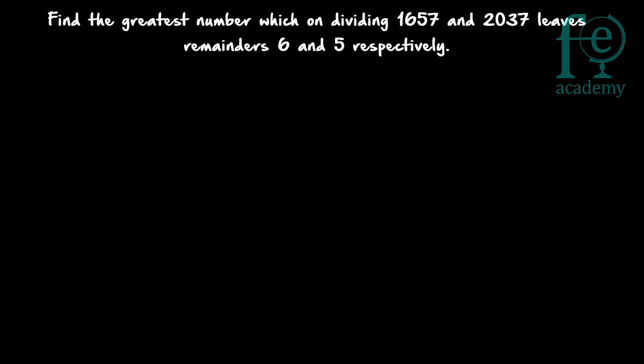What is the given question? Let x be the given number. It is given that 1657 when divided by x leaves a remainder of 6, and 2037 when divided by x leaves a remainder of 5. So 1657 mod x = 6 and 2037 mod x = 5. You have to find the greatest value possible for x.